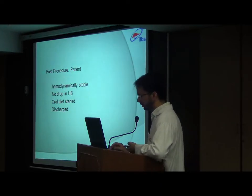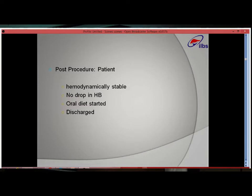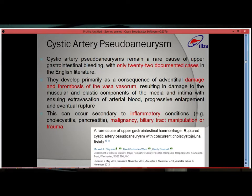The patient is under evaluation and possibly a candidate for cholecystectomy. A review of the literature reveals that cystic artery pseudoaneurysm remains a very rare cause of upper GI bleed — only some 22 cases have been documented in the English literature. They develop primarily as a consequence of adventitial damage and thrombosis of the vasa vasorum, which results in damage to the muscular and elastic components of the media and intima with progressive extravasation of arterial blood, leading to progressive enlargement and eventually rupture.